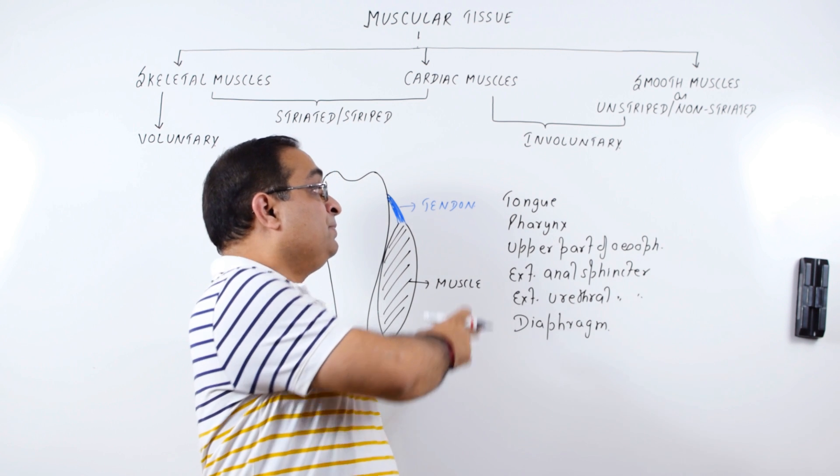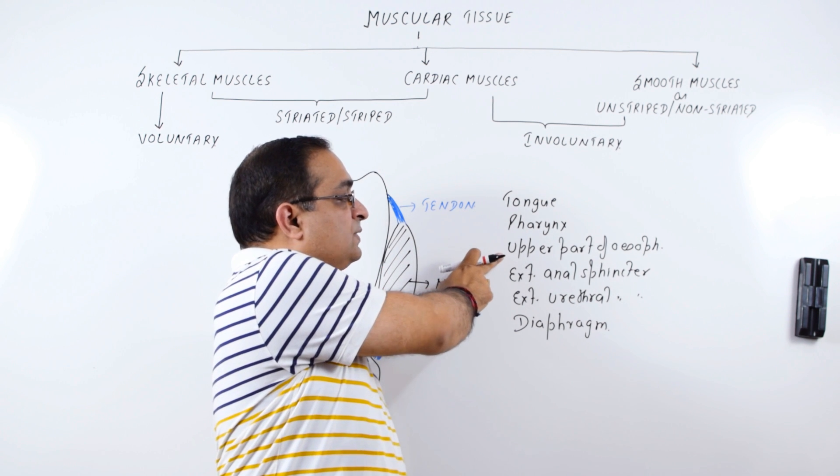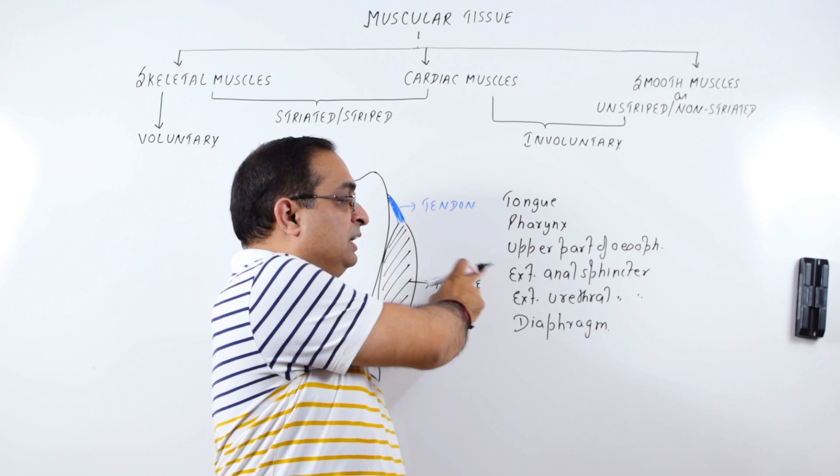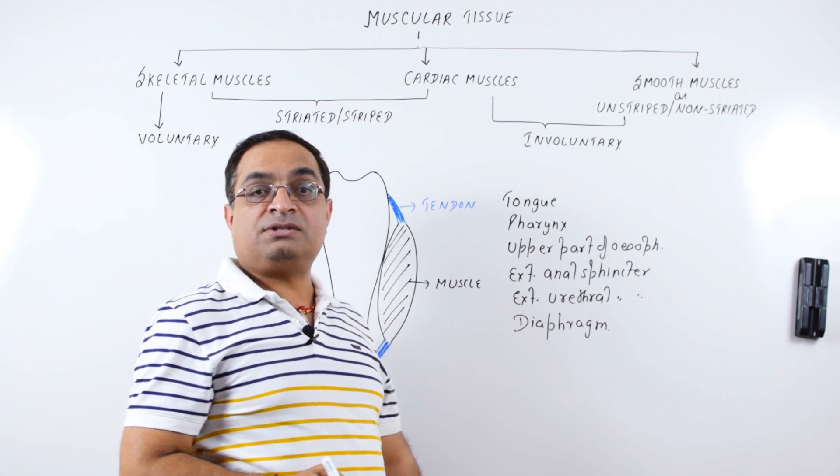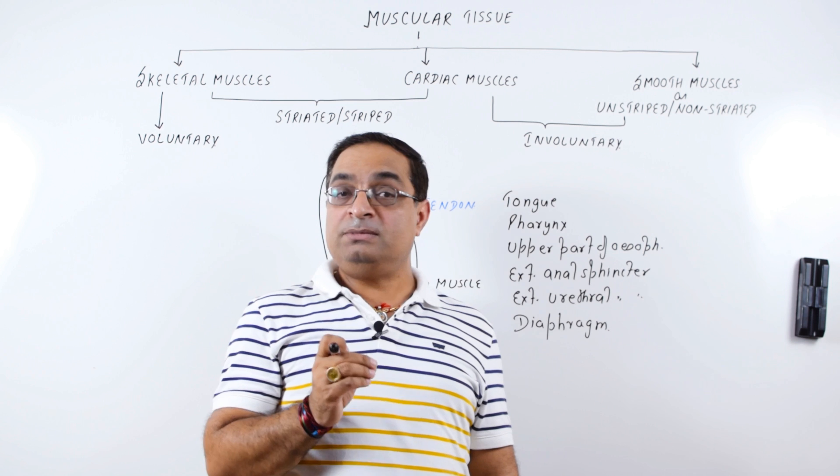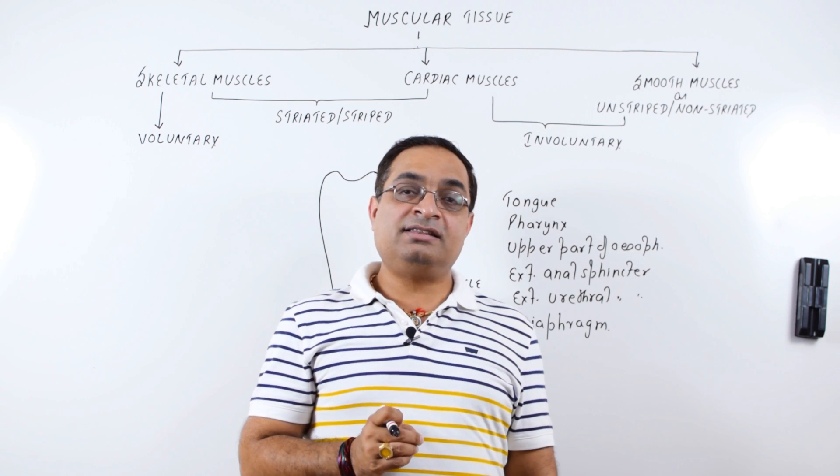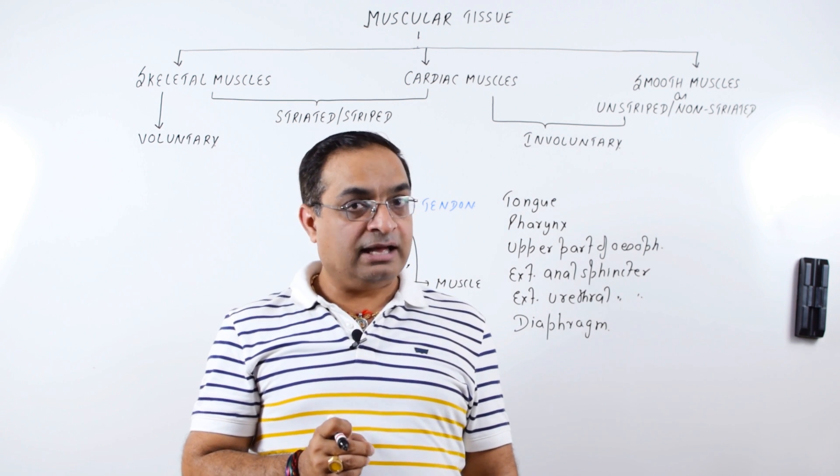But it is regulated involuntarily by the medulla region of brain. We do have voluntary control over breathing because we can hold our breath for short duration. As you can see, they are present in Tongue, Pharynx, upper part of Esophagus, external anal sphincter. That means entry to the digestive system and exit from the digestive system is under the voluntary control of the animal.